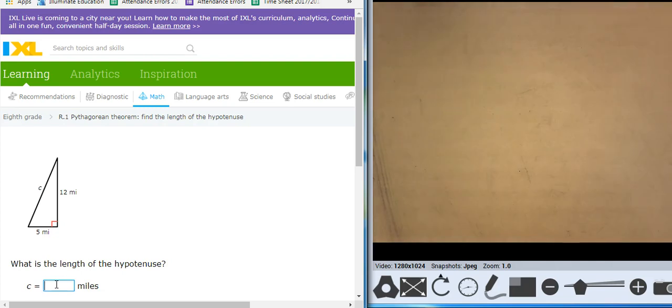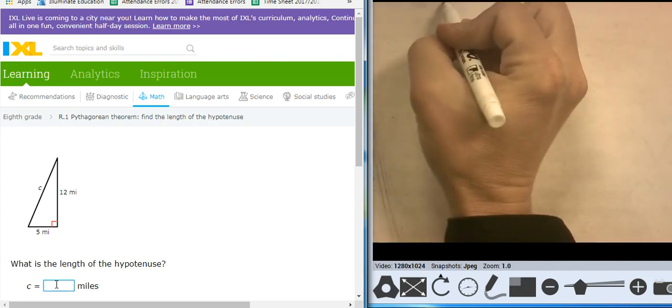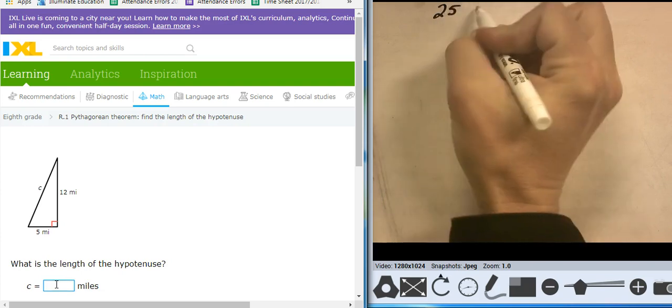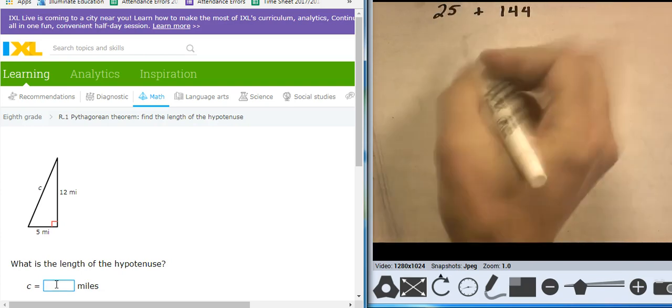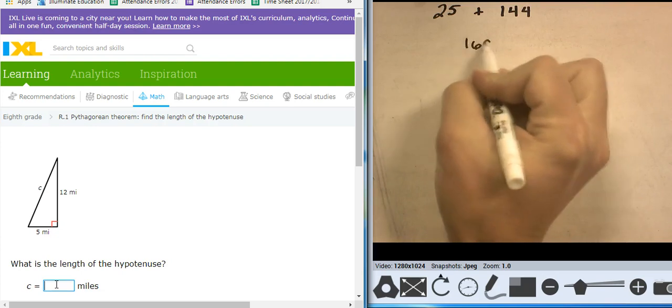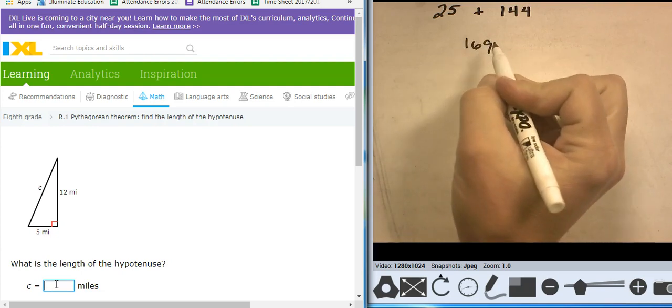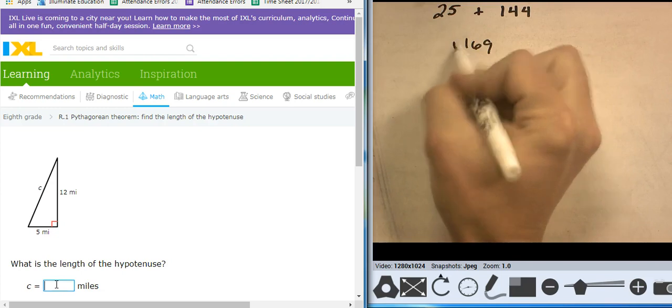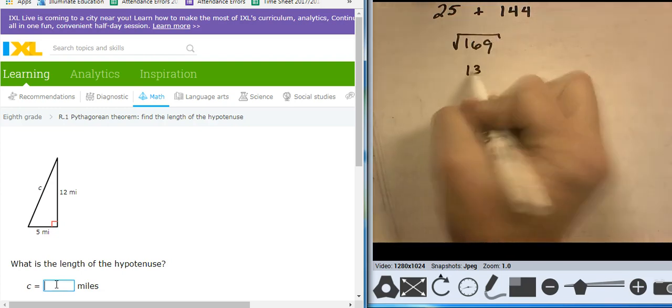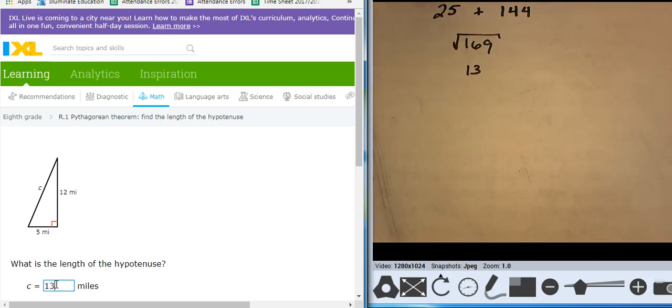So this is going to be 5 squared plus 12 squared. So 5 squared is 25 plus 12 squared, which is 144. I add those together, I get 169. But that's not the length of that side. That's way too big. I take the square root of it, it takes me to 13. So that missing side is 13.